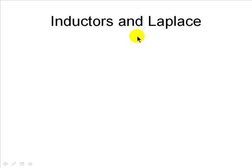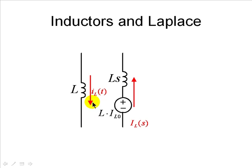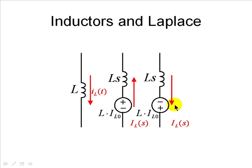Before solving, let's recall how inductors are replaced by equivalent circuits in the Laplace domain. An inductor with value L henries is represented by an impedance Ls in series with a source. The initial condition source always helps the assumed positive direction for the inductor's current — the source points in the direction of the initial condition. The source value is L times IL(0). In our case, this is the positive direction for our inductor, and this is the model we will use.